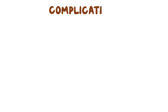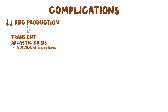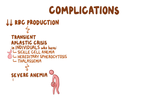There are a few complications caused by parvovirus B19 infection. The decreased red blood cell production can cause transient aplastic crisis in individuals who have underlying conditions like sickle cell anemia, hereditary spherocytosis, and thalassemia. Because they already have fewer red blood cells, the breakdown of erythropoiesis results in severe anemia, with symptoms like pale skin, fatigue, and weakness.